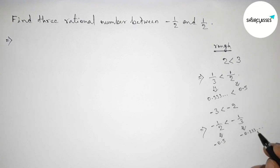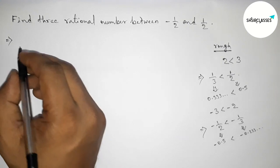So now here, first write down all the rational numbers between -1/2 and 1/2.